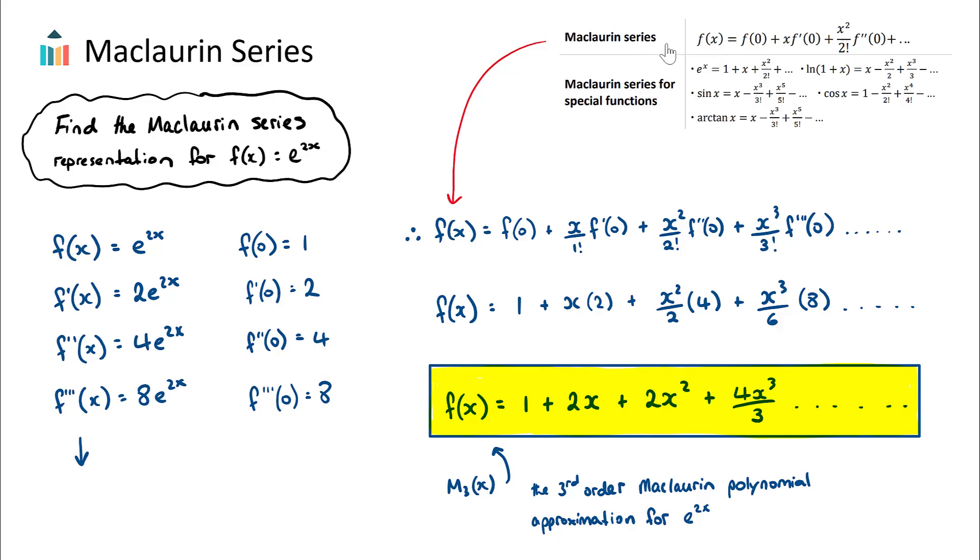Now, something that you might not know, but this is fantastic, is that the IB do give us five special Maclaurin series expansions already here. These are ones that they give us in our formula booklet. If we ever needed to find the expansion of any of these, or the Maclaurin series approximation, they've actually already given us the work here. We don't need to do any more.